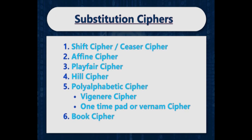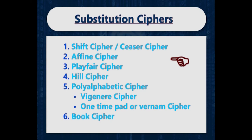Some of the common substitution ciphers are shift cipher, affine cipher, playfair cipher, hill cipher, poly-alphabetic ciphers which include Vigenère cipher and one-time pad or Vernam cipher, and the last one is book cipher. In the previous lecture we covered the introduction to ciphers and three types: shift cipher, affine cipher, and playfair cipher.